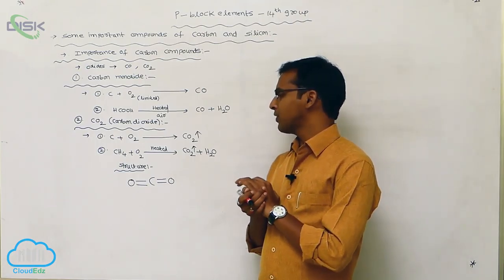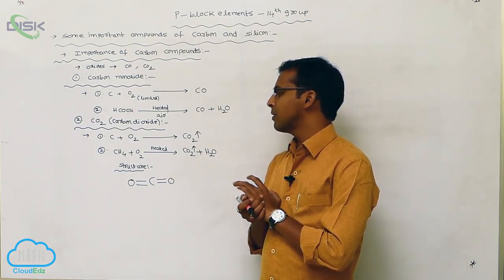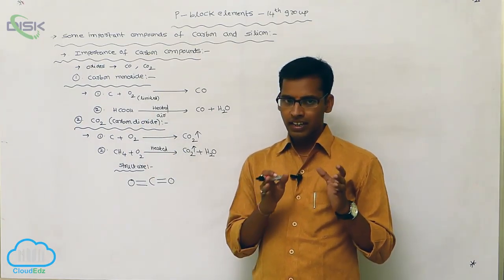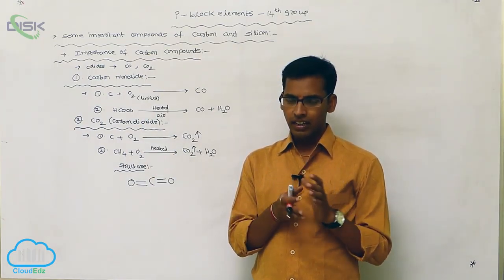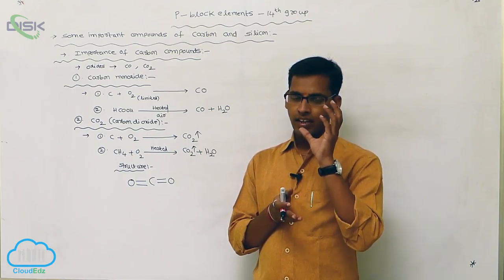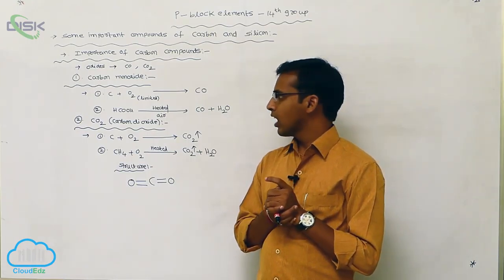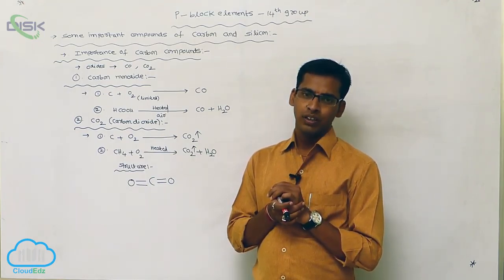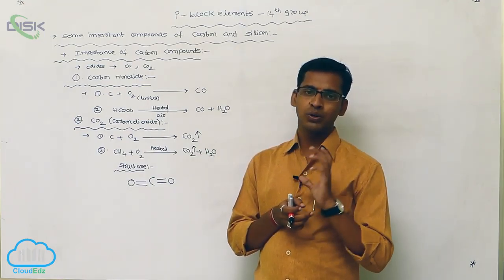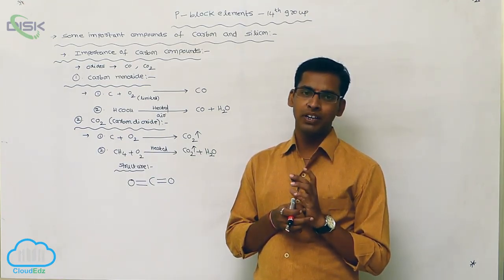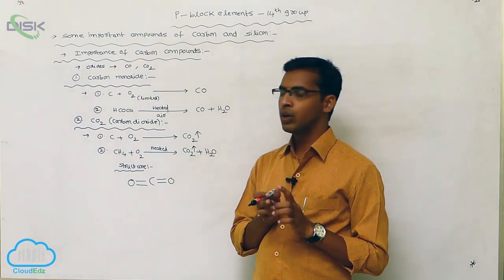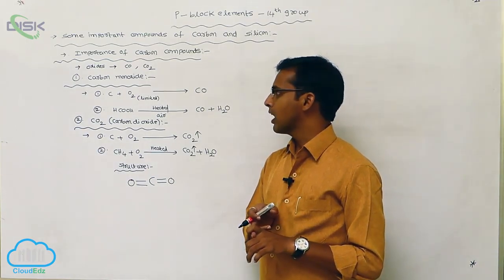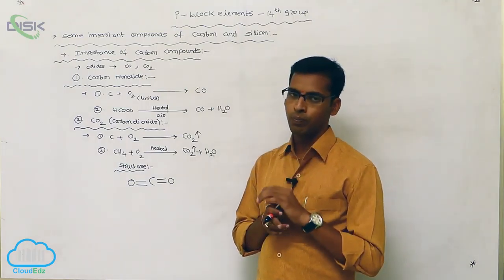The main structural difference between carbon dioxide and carbon monoxide is that carbon dioxide is an acid while carbon monoxide is a neutral compound. Both undergo sp hybridization, but carbon dioxide has no lone pair whereas carbon monoxide has one lone pair.